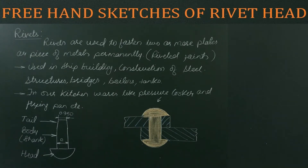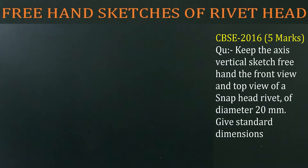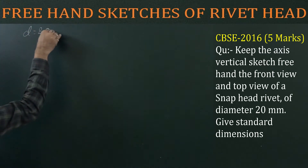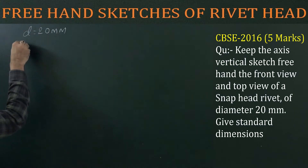In our syllabus, we have four types of rivet heads: snap head, pan head, 60-degree CSK (CSK stands for countersunk), and flat head. Now let's begin with a problem. This question was asked in the 2016 board examination of Class 12 for five marks: keeping the axis vertical, sketch freehand the front view and top view of a snap head rivet of diameter 20 mm, giving standard dimensions.